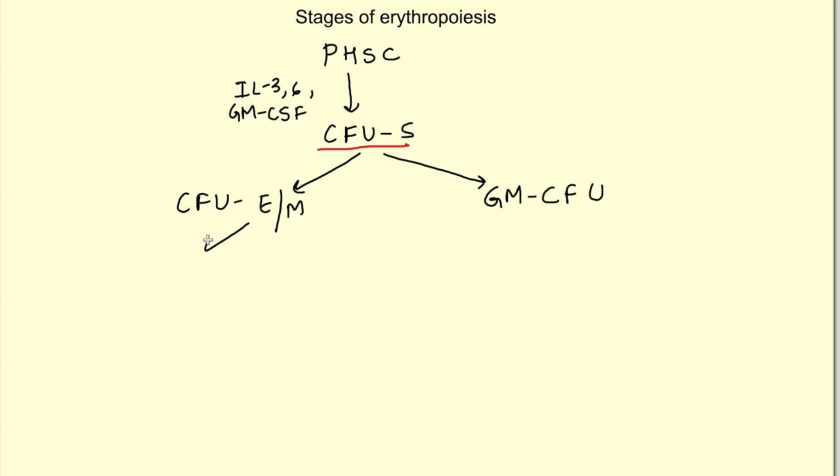CFU-EM further differentiates into CFU-E, that is colony forming unit erythrocyte, and CFU-M, colony forming unit megakaryocyte. The differentiation to different lineages depends on the presence of different types of growth factors.